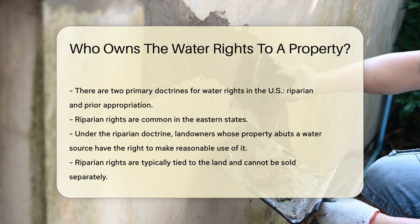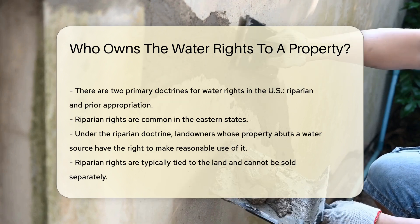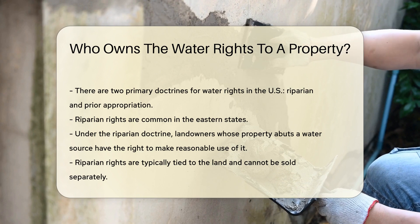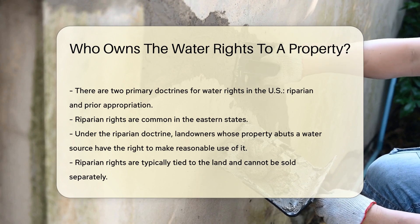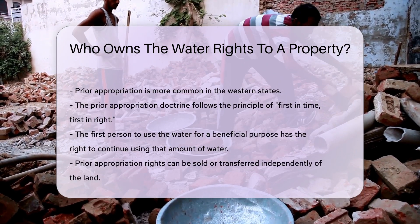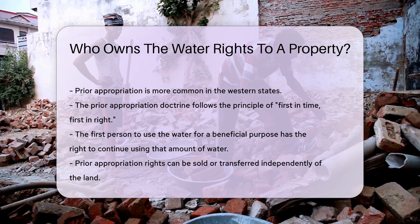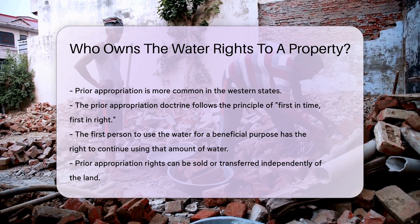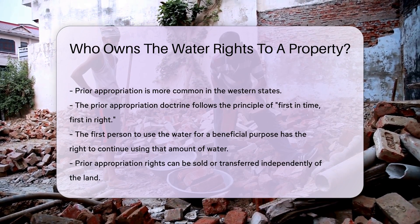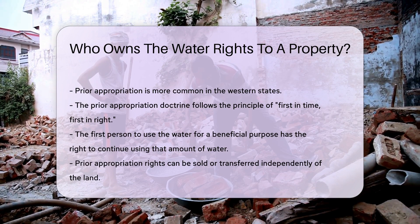Riparian rights are typically tied to the land and cannot be sold separately. In contrast, prior appropriation is more common in the western states. This doctrine follows the principle of first in time, first in right. The first person to use the water for a beneficial purpose has the right to continue using that amount of water, and these rights can be sold or transferred independently of the land.